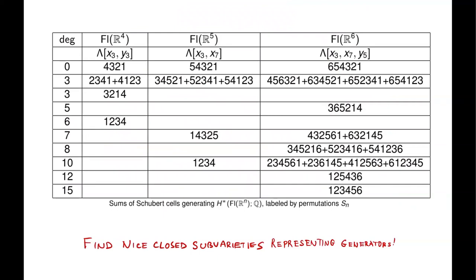As you go to higher dimensions, the situation gets worse. It may happen that you have to sum together several Schubert cells. It would be an interesting challenge to find a nice description of these cohomology classes — perhaps the right basis is not in terms of Schubert cells, but in terms of some nice sub-varieties of the flag variety. Additively, this is an interesting open question.